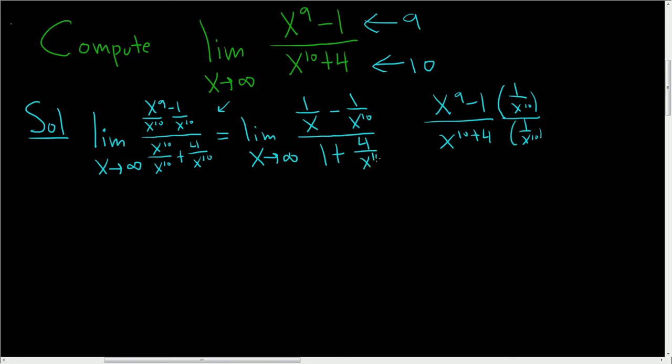At this point, it's clear. In the numerator, you get 0 minus 0. In the denominator, you get 1 plus 0. So you get 0 over 1, which is equal to 0.